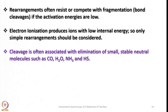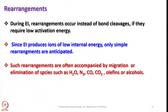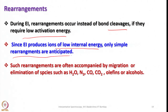Rearrangements often resist or compete with fragmentation — they resist bond cleavage when activation energies are very low. Electron ionization produces ions with low internal energy, so only simple rearrangements should be considered for electron ionization. In contrast, electron impact often leads to cleavage associated with elimination of small stable neutral molecules such as CO, H2O, NH3, and H2S. Rearrangements are often accompanied by migration or elimination of species such as H2O, N2, CO, CO2, or sometimes olefins or alcohols.